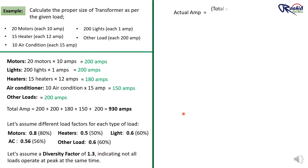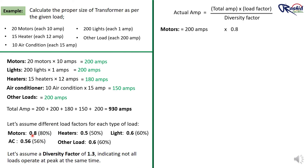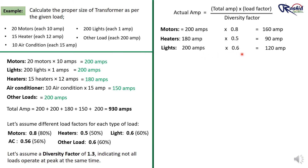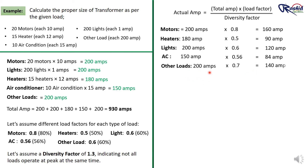Now applying the formula — Actual Ampere = Total Ampere × Load Factor ÷ Diversity Factor — we calculate each load: motors 200 × 0.8 = 160A, heaters 180 × 0.5 = 90A, lights 200 × 0.6 = 120A, ACs 150 × 0.56 = 84A, and other load 200 × 0.7 = 140A. The total with load factors applied is 594 Ampere.